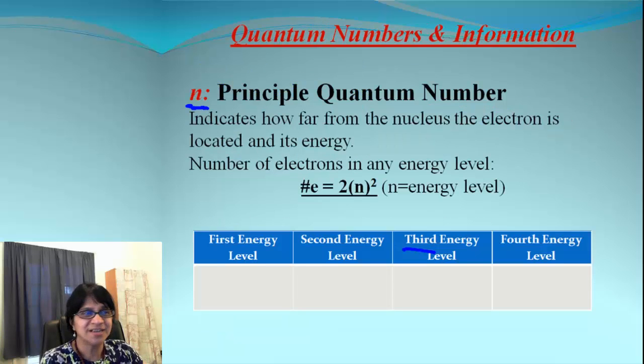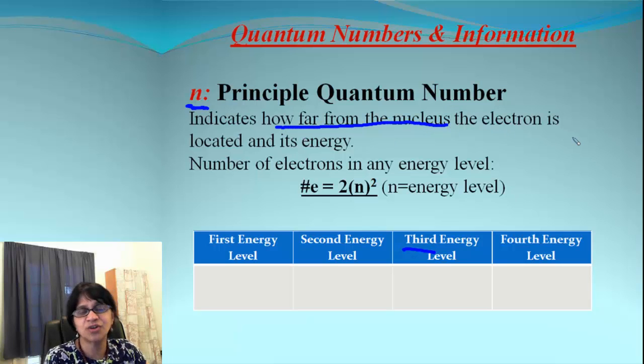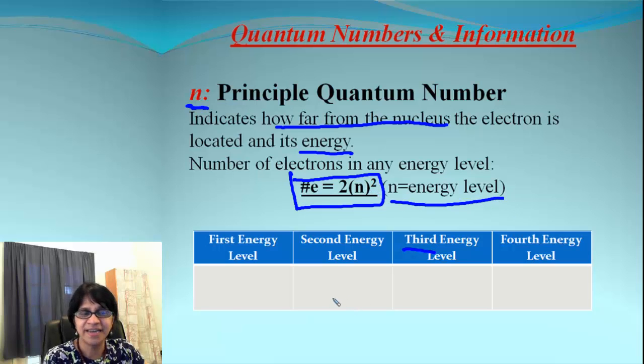Now how are you going to use this? The principal quantum number N indicates two important things about the electron. First of all, it tells you how far electron is from the nucleus. It also gives the energy level for the electron. And then how do we know how many electrons are present at a particular energy level? There is a simple formula. Number of electrons is equal to two times N squared, where N stands for energy level.